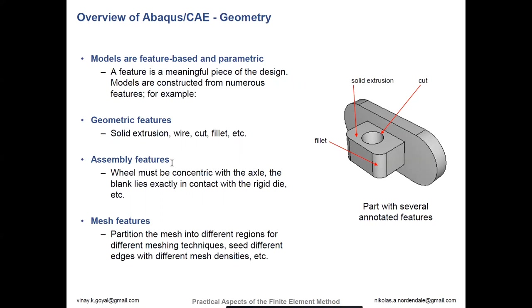Let's start with geometry. Models are based off of features and their parametrics. A feature is a meaningful part of the design — this could include partitions, extrusions, fillets, cuts — all of these things are features that will be translated into the geometry of your actual final mesh. A geometric feature could be taking a solid extrusion, a wire, or a single line through two points. You could have a cut through a solid object or a fillet — a curving of a sharp edge. Assembly features could specify that a cylindrical cut has to be concentric with an axle, or a blank has to lie exactly in contact with a rigid die.